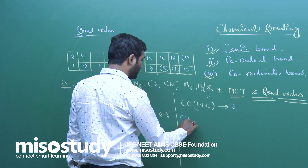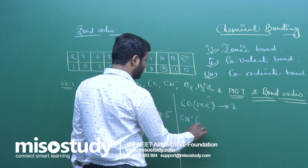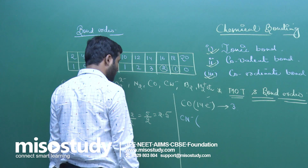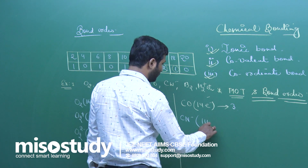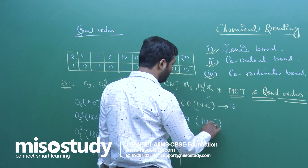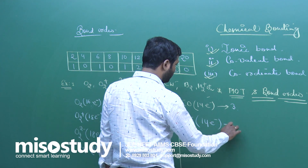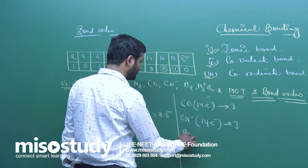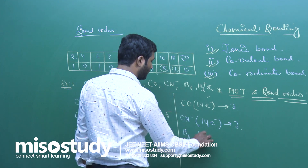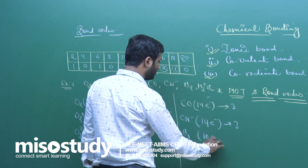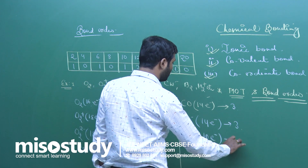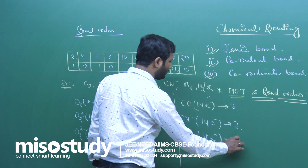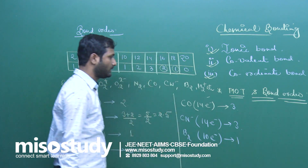CN⁻: C has 6, 6 + 7 = 13, plus 1 for the negative charge = 14-electron system. Below 14, this is 3, so bond order is 3. B2 is a 10-electron system. Below 10 there is 1, so the bond order here is 1.